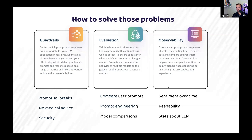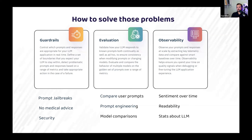You want observability over time. You might see what the sentiment is over time — from prompts going into your model, or from responses. How readable are your responses? Are people getting more toxic with your model? It gives you really good insight into how your model is actually being adopted and used, and you can make adjustments as you go.